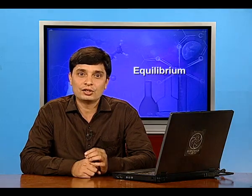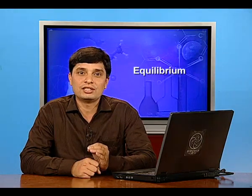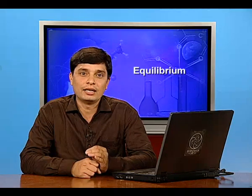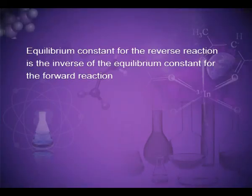Molar concentrations of the different species are indicated by enclosing them in square brackets. It should also be noted that the equilibrium constant for the reverse reaction is the inverse of the equilibrium constant for the forward reaction.